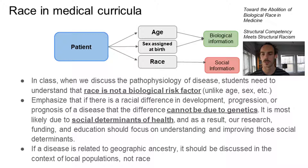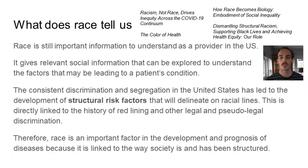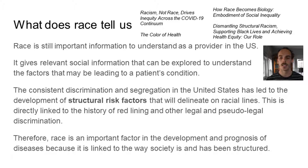Our research funding and education should focus on understanding and improving those social determinants. If a disease is related to geographic ancestry, it should be discussed in the context of local populations, not race. Race is still important information to understand as a provider in the United States — it gives relevant social information that can be explored to understand the factors that may be leading to a patient's condition. The consistent discrimination and segregation in the United States has led to the development of structural risk factors that delineate along racial lines, directly linked to the history of redlining and other legal and pseudo-legal discrimination. Therefore, race is an important factor in the development and prognosis of diseases because it is linked to the way that society is and has been structured.